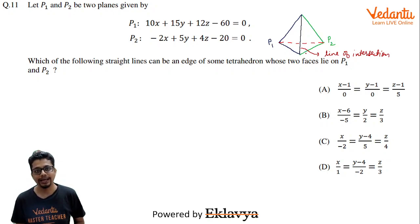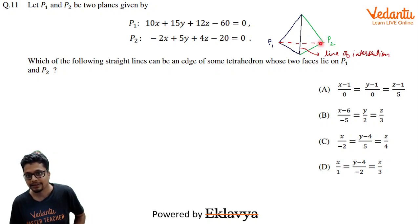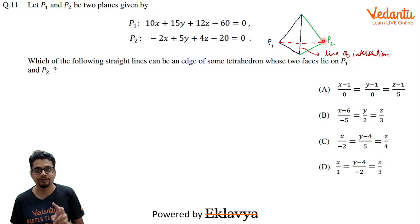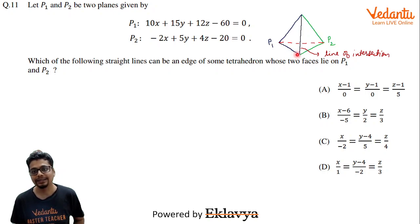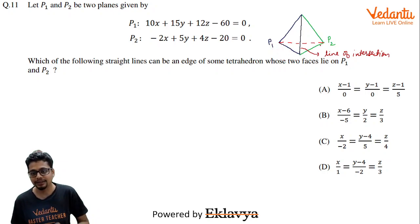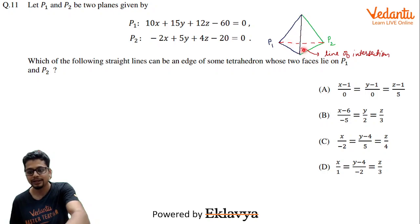Lines lying on plane P2 also cut the line of intersection of P1 and P2. Similarly, two sides lie on plane P1 and cut the line of intersection. The remaining one edge is neither on P1 nor P2 — it cuts both planes but doesn't pass through their line of intersection.